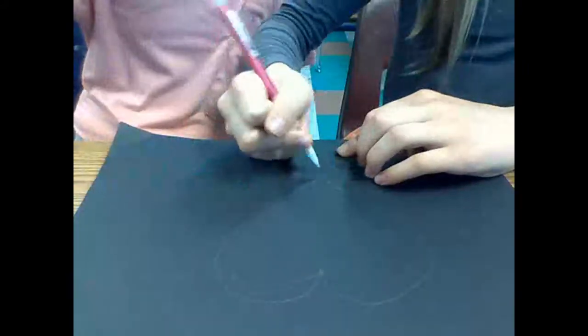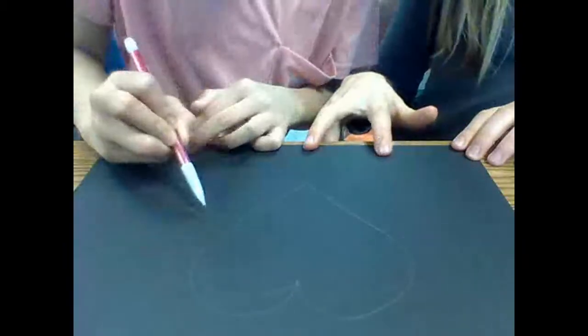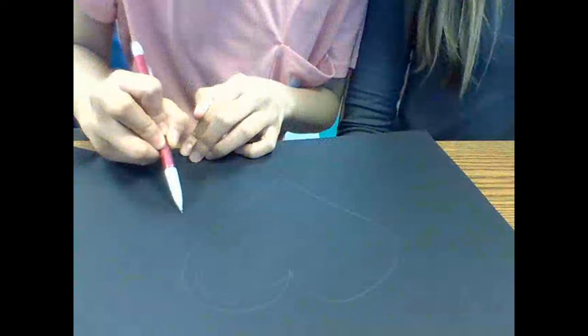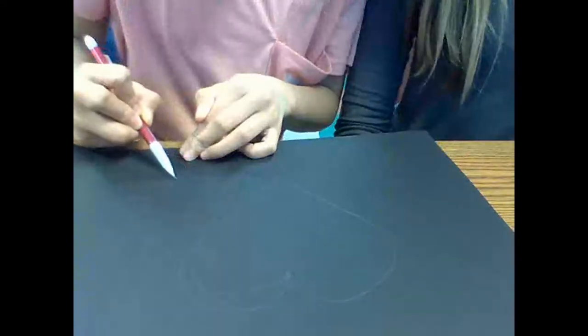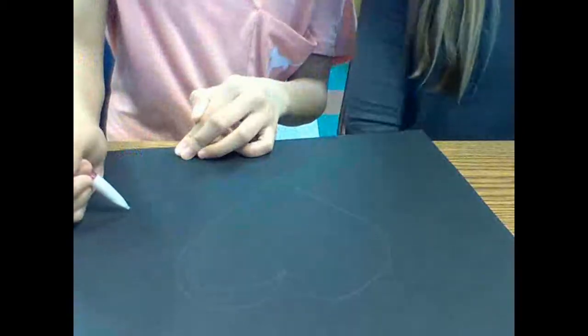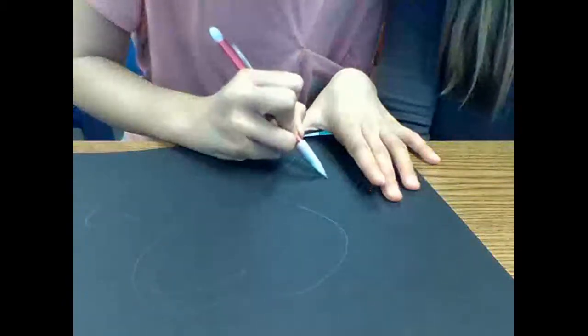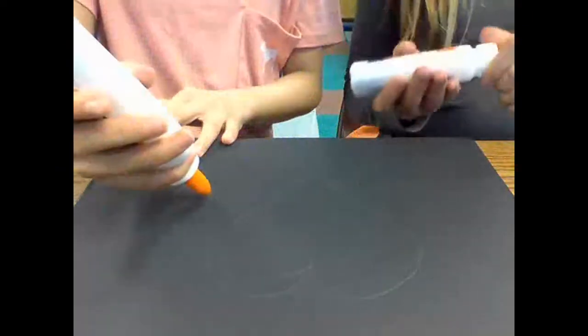So we finished our heart—you guys probably can't see it—and we're now going to do two hearts on the side. Once again, you guys can do any design you want. Now you're going to take your glue and just trace it.